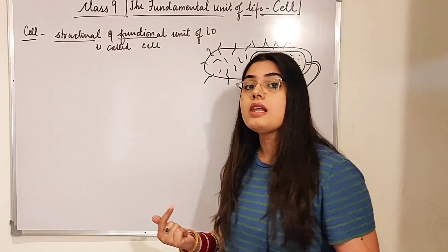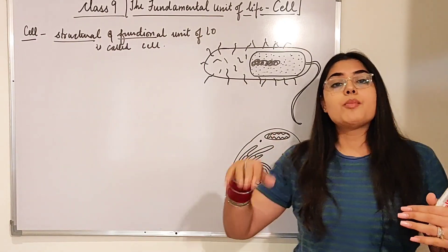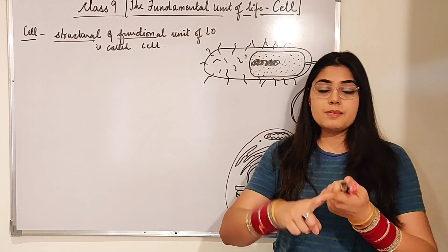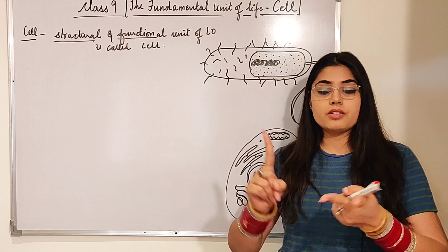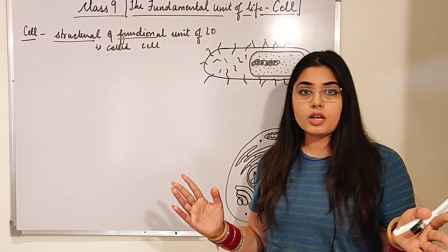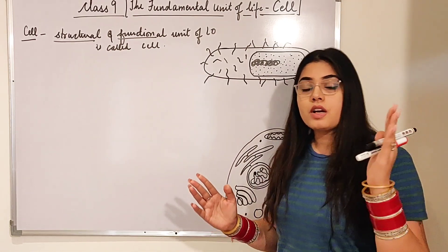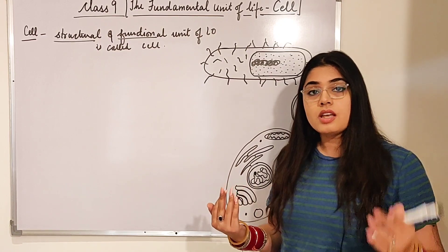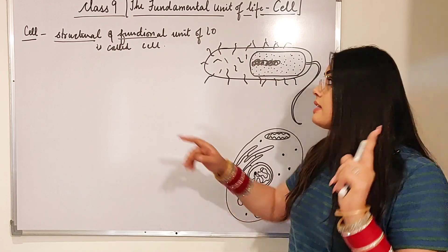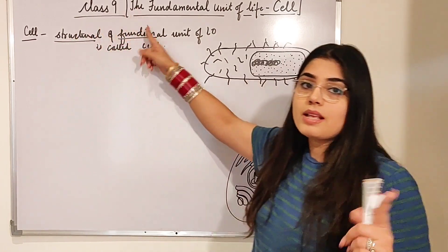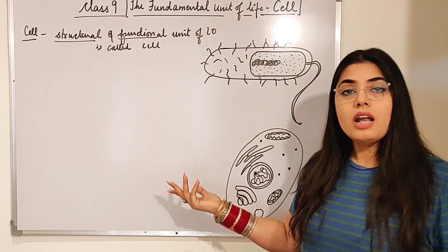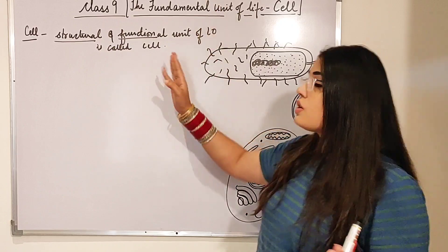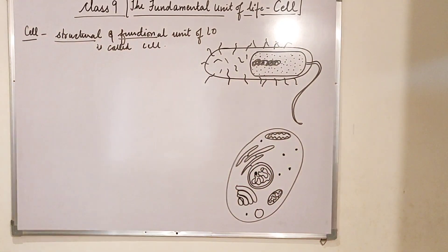Cell is also the functional unit because it is responsible for performing functions. In your body, digestion, respiration, excretion, and reproduction are all happening. Who is responsible for these functions? It is the cell. That is why cell is known as both the structural and the functional unit of living organisms.